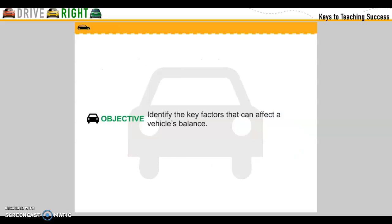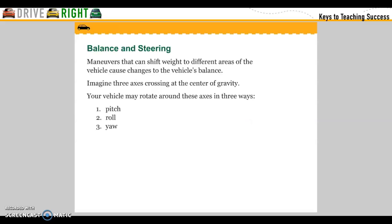Objective: Identify the key factors that can affect a vehicle's balance and steering. Maneuvers that can shift weight to different areas of the vehicle cause changes to the vehicle's balance. Imagine three axles crossing at the center of gravity. Your vehicle may rotate around these axles in three ways.